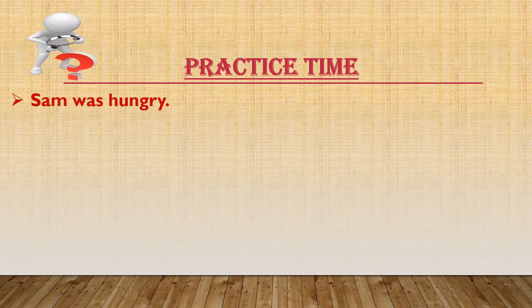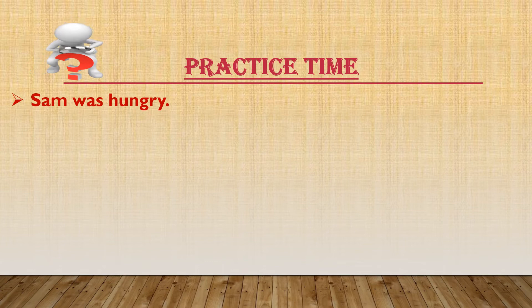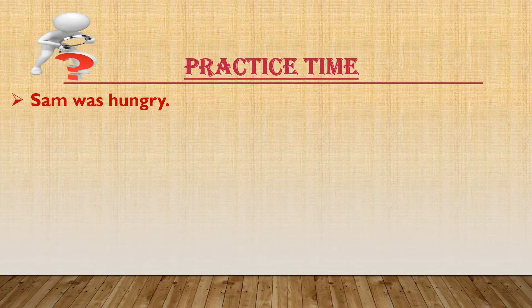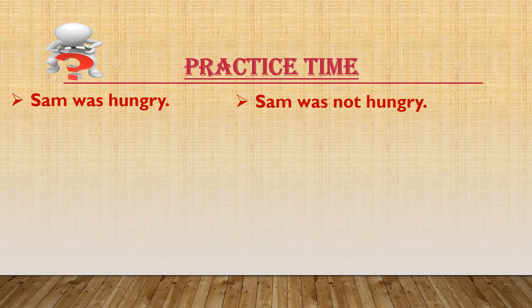The first one: 'Sam was hungry.' Just read the sentence and see — is it having a helping verb? Yes, it has 'was.' In that case, we just need to add 'not' after the helping verb, and your sentence will become negative. So your answer is: Sam was not hungry.